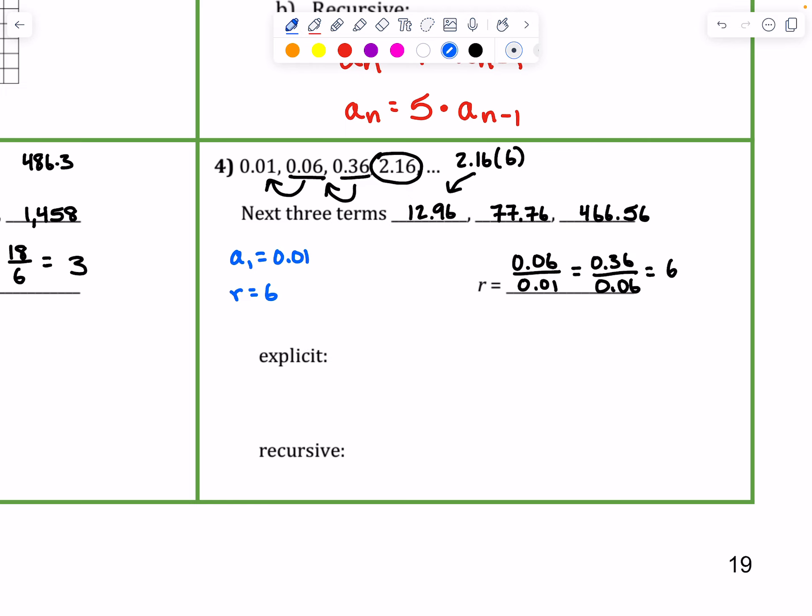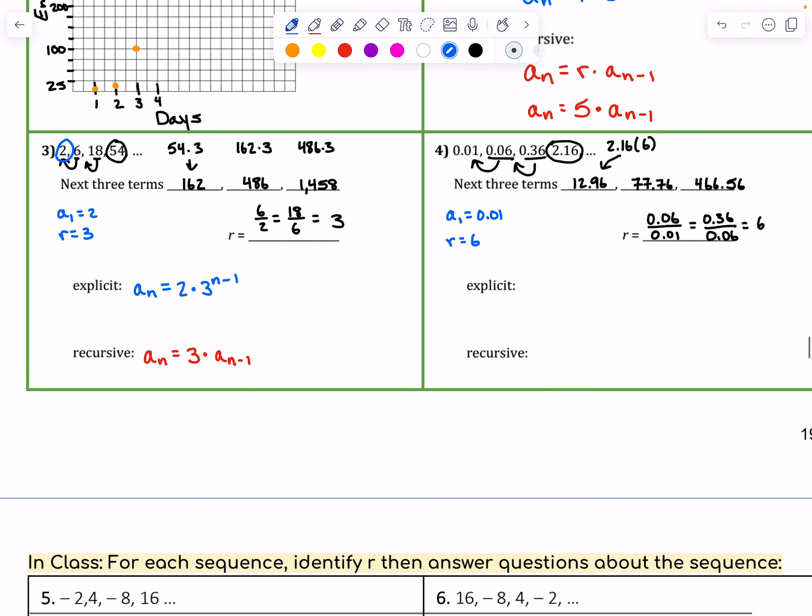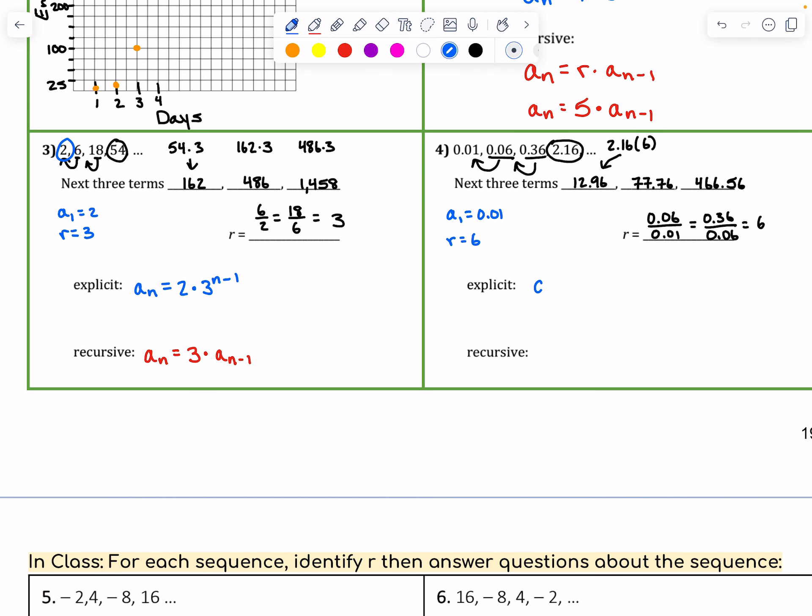And then we can write out the explicit and the recursive form. So the explicit form would be a sub n equals the first term, which was 0.01 times the common ratio of R, which is 6 in this case, to the power of n minus 1. And then the recursive form is a sub n is equal to the common ratio times the previous term. So that's just a sub n minus 1 times 6, or 6 times a sub n minus 1.